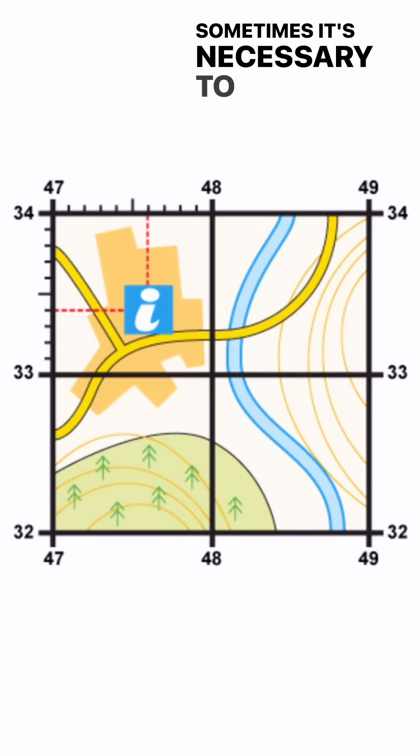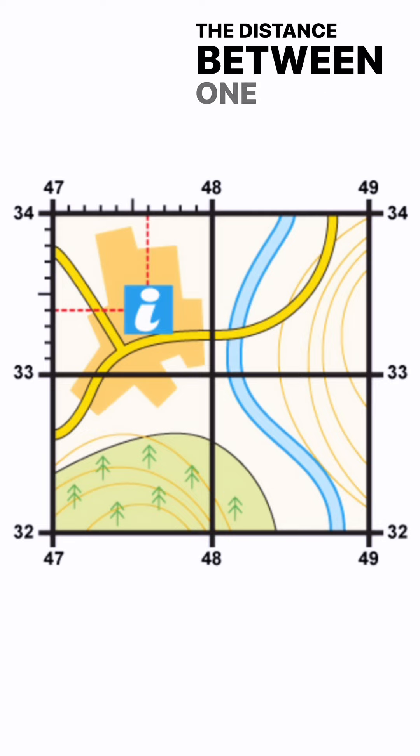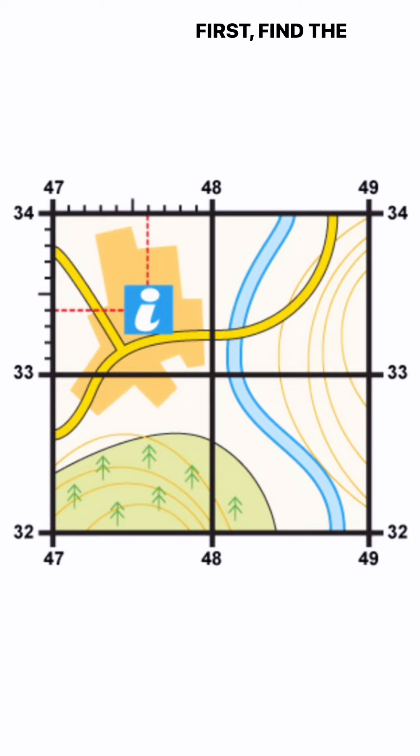Sometimes it's necessary to be even more accurate. In this case you can imagine that the grid is divided into 100 tiny squares. The distance between one grid line and the next is divided into tenths. First find the four-figure grid reference but leave a space after the first two digits.